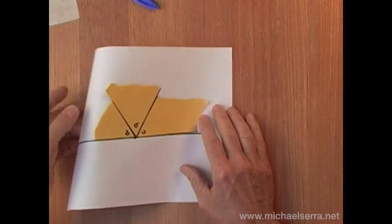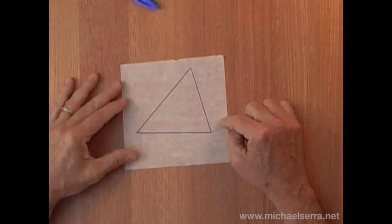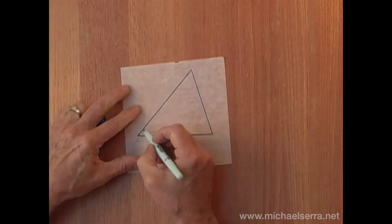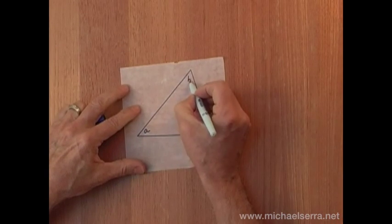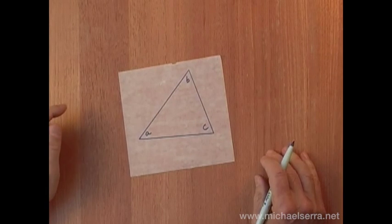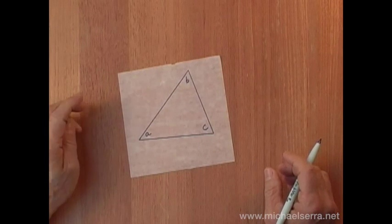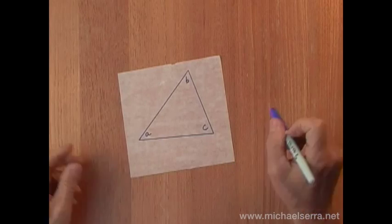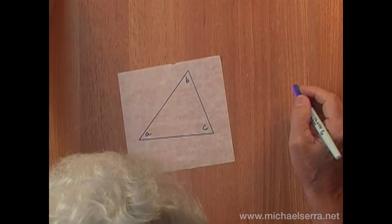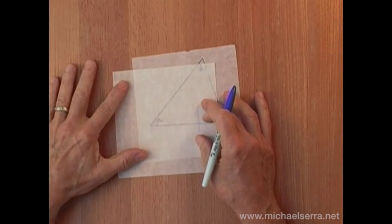Now a third method is to take a patty paper and put a triangle on there. Label the three interior angles. And now what we're going to do is transfer that onto another piece of paper. We could grab a patty paper and lay it on top.